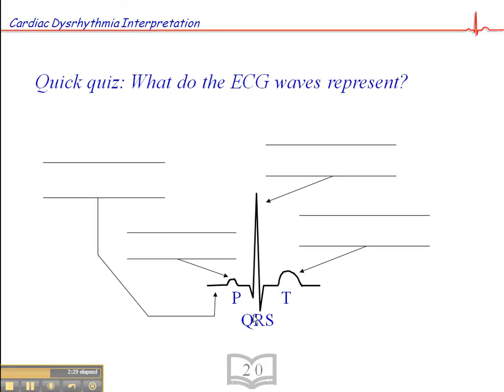So just as a bit of a review here. This line here would be the isoelectric line. The P wave here would be a representation of atrial depolarization. And the QRS represents ventricular depolarization. I'm just putting the initials there because it would take me too long to write this. And the T wave represents ventricular repolarization.